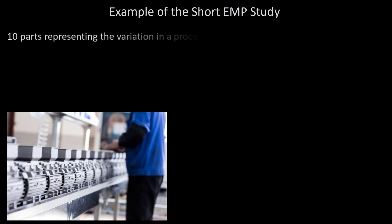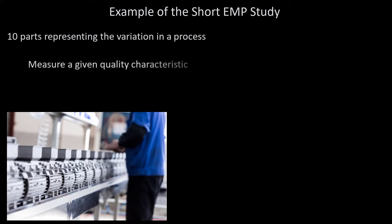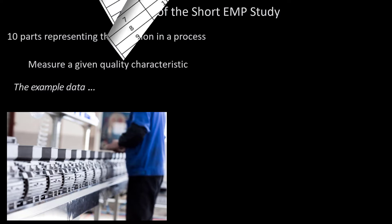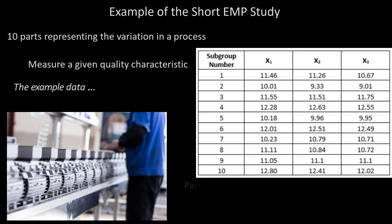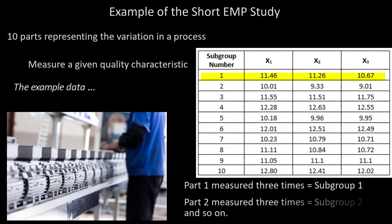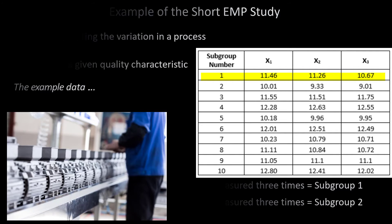In this example, we have 10 parts representing the variation in our process. We measure a quality characteristic, and here are the results. Each subgroup number represents a part — Part 1 was measured 3 times at subgroup 1, Part 2 measured 3 times at subgroup 2, and so forth. This is the data we're going to use in our analysis.